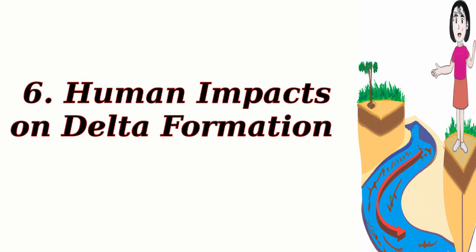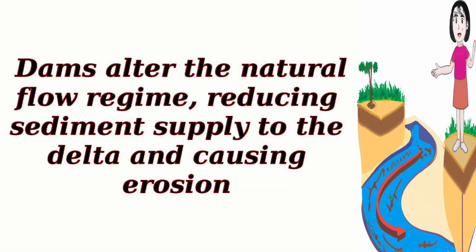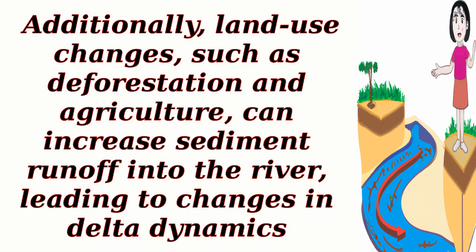6. Human impacts on delta formation. Human activities, including dam construction, channelization, and land use changes, can significantly influence delta formation. Dams alter the natural flow regime, reducing sediment supply to the delta and causing erosion. Channelization and dredging can modify the river's morphology, altering sediment transport patterns and affecting delta development. Additionally, land use changes, such as deforestation and agriculture, can increase sediment runoff into the river, leading to changes in delta dynamics.